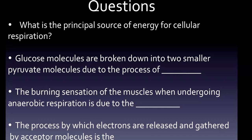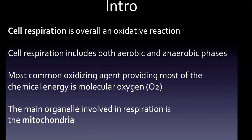Cell respiration is overall an oxidative reaction, meaning it loses electrons and loses hydrogen. Respiration is the biochemical process in which cells obtain energy by combining oxygen and glucose, resulting in the release of carbon dioxide, water, and ATP — the currency of energy in cells. Cell respiration includes both aerobic and anaerobic phases. Nutrients used include sugars, amino acids, and fatty acids, but the most common oxidizing agent providing chemical energy is molecular oxygen, O2.